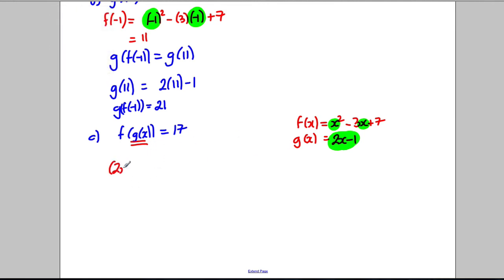So we're going to have (2x - 1)² take away 3 multiplied by (2x - 1) add 7 is equal to 17. We're going to expand this and we're going to solve the equation. So expanding this I get myself 4x² - 4x + 1 take away 6x and add 3 add 7 is equal to 17.